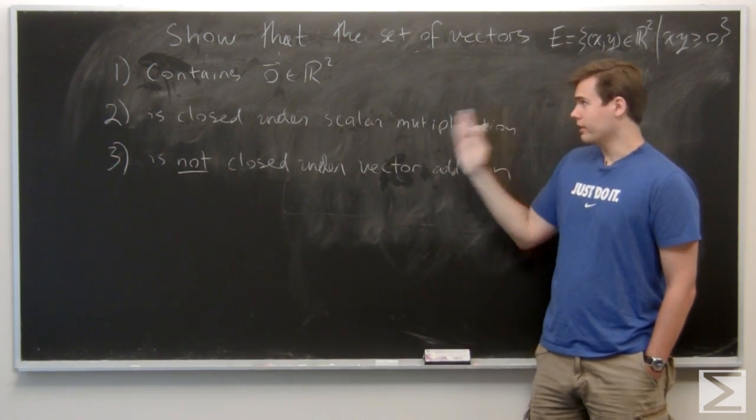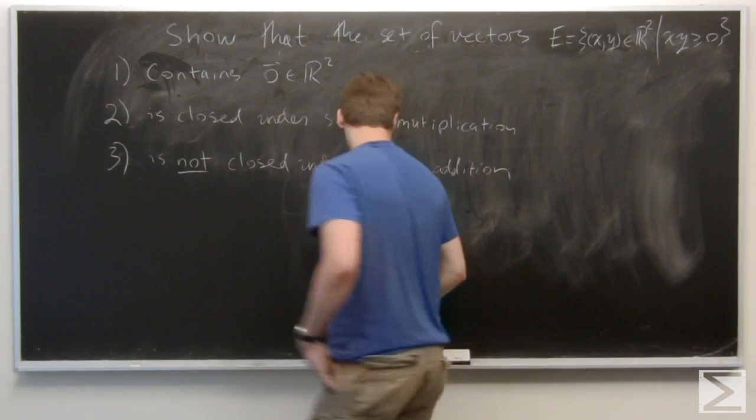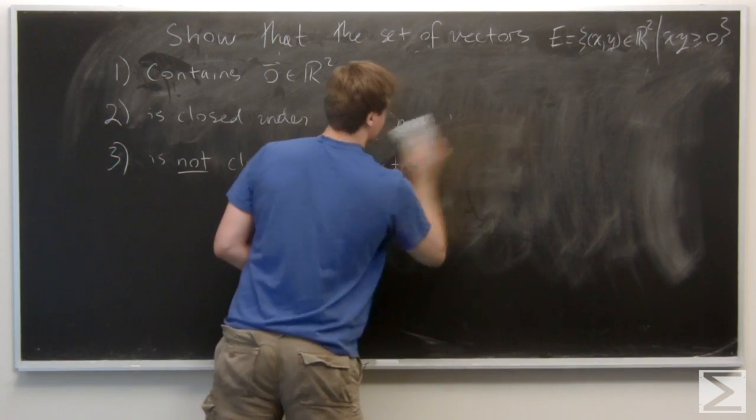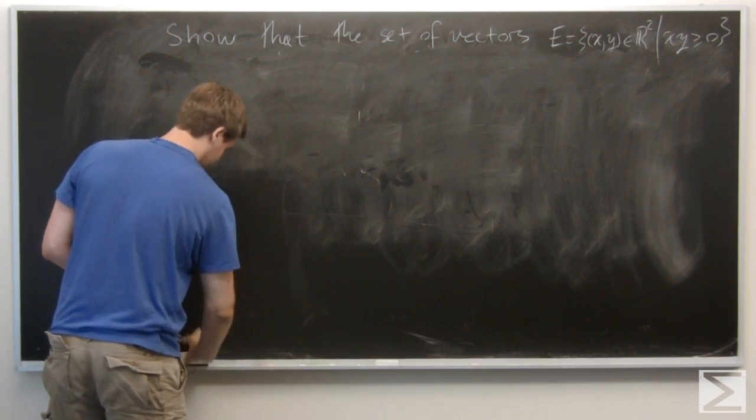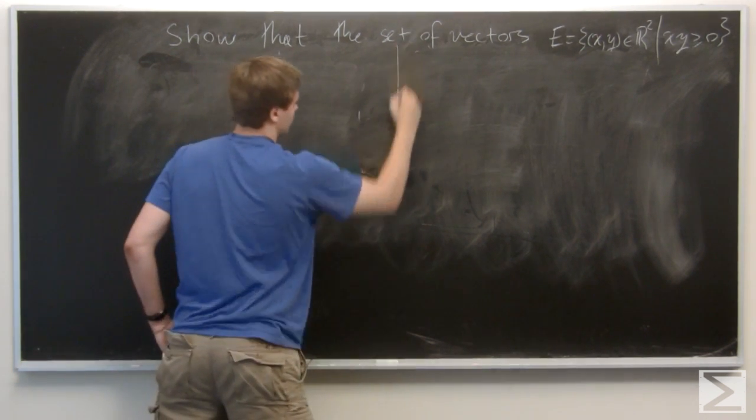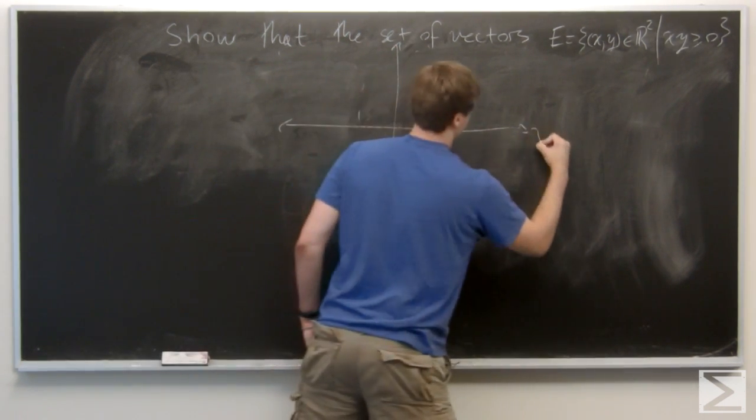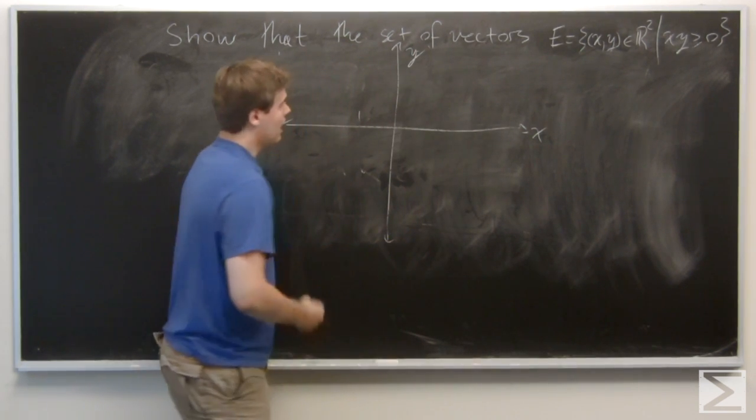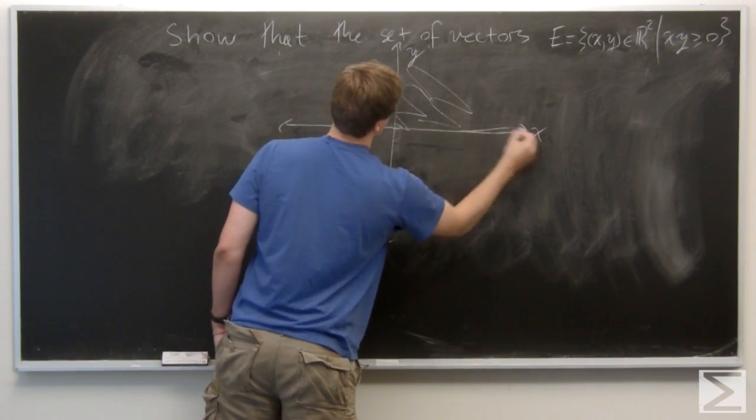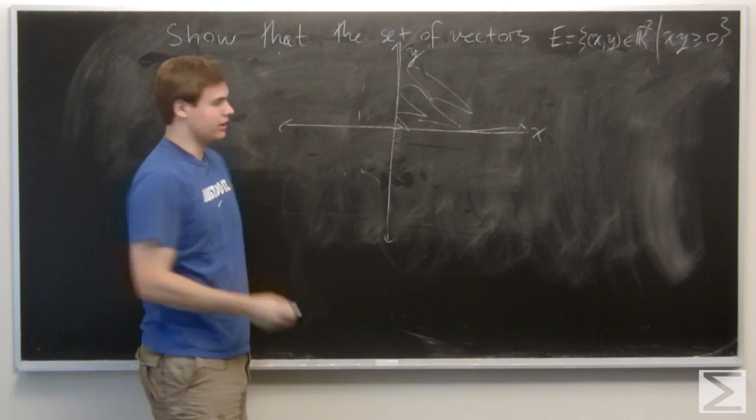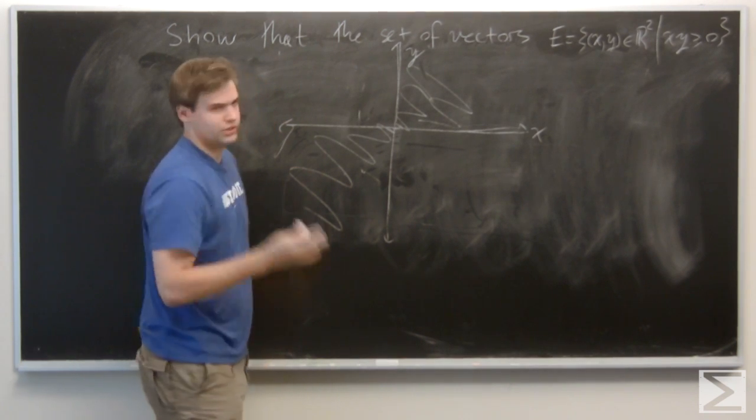So basically, this set E is almost a linear subspace of R², but not quite. Let's sketch a picture to see what it really looks like. We're going to draw the plane. Here's the x-axis, here's the y-axis, and E consists of all the points in the first quadrant, including these axes, and all the points in the third quadrant, including these axes, just to have a mental picture.